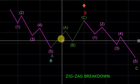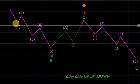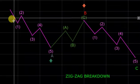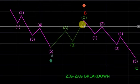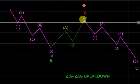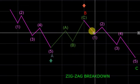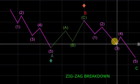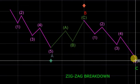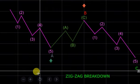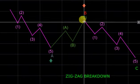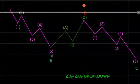So pay attention to them, guys. Downward wave one, two, three, four, five — then we had our correction: A, B, C. And then from there we had our one, two, three, four, five again. The overall big picture of this correction, guys, is A, B, and C. So this was your A, your B, and then your C.